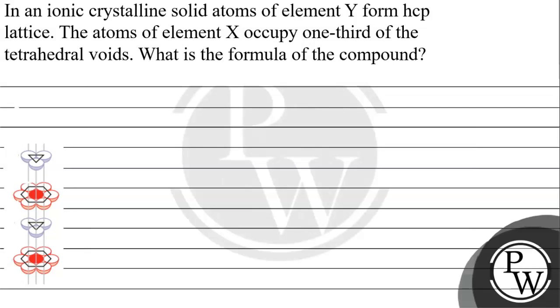Hello, let's read this question. The question says in an ionic solid, atoms of element Y form HCP lattice. The atoms of element X occupy one-third of the tetrahedral voids. What is the formula of the compound?